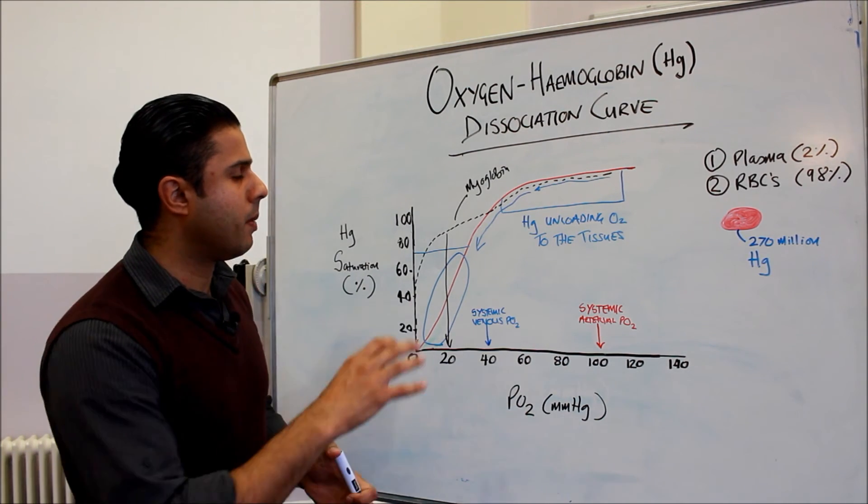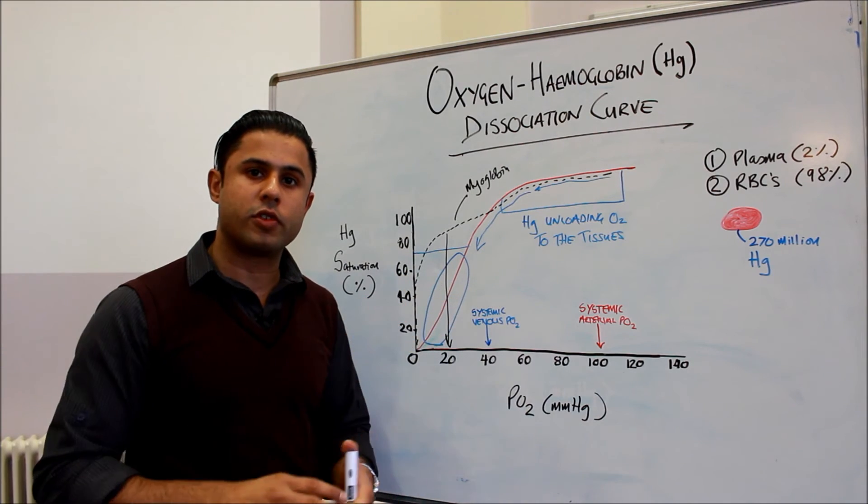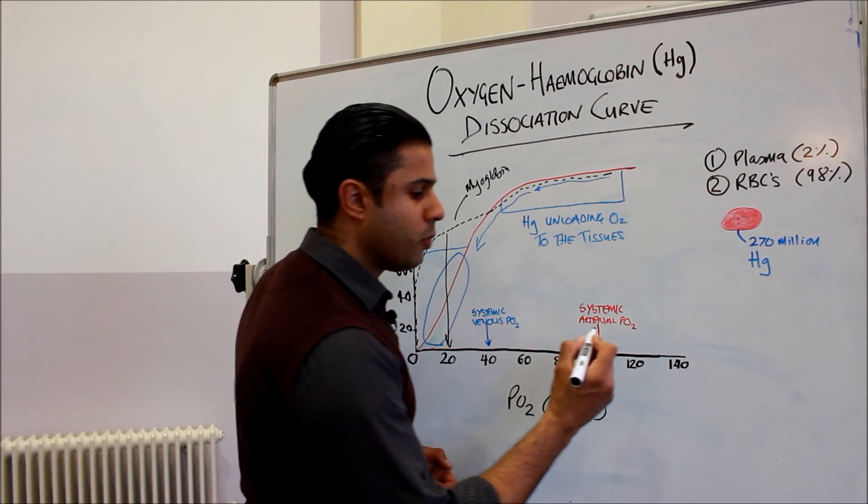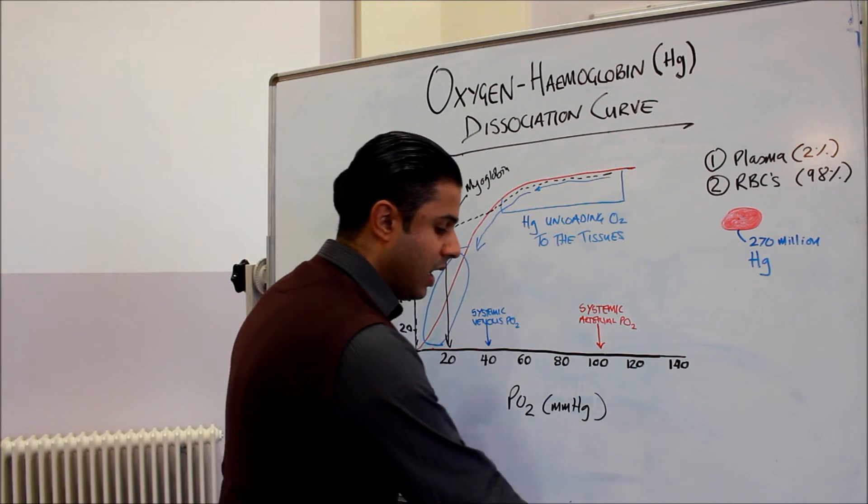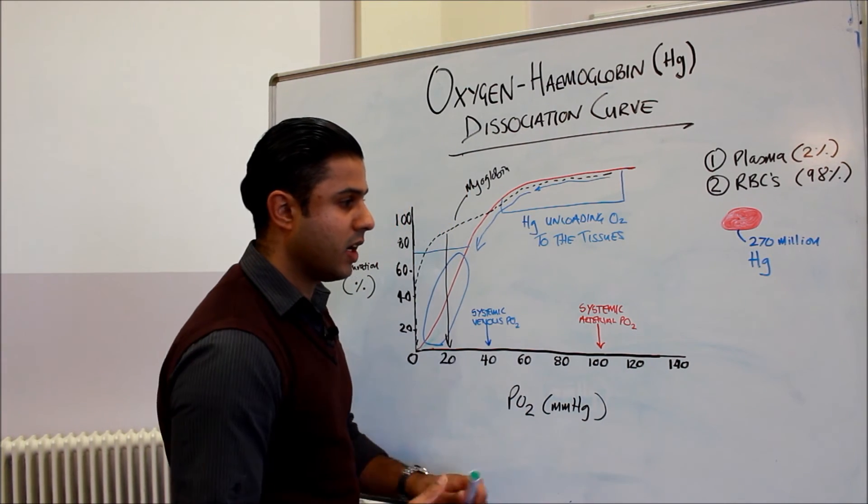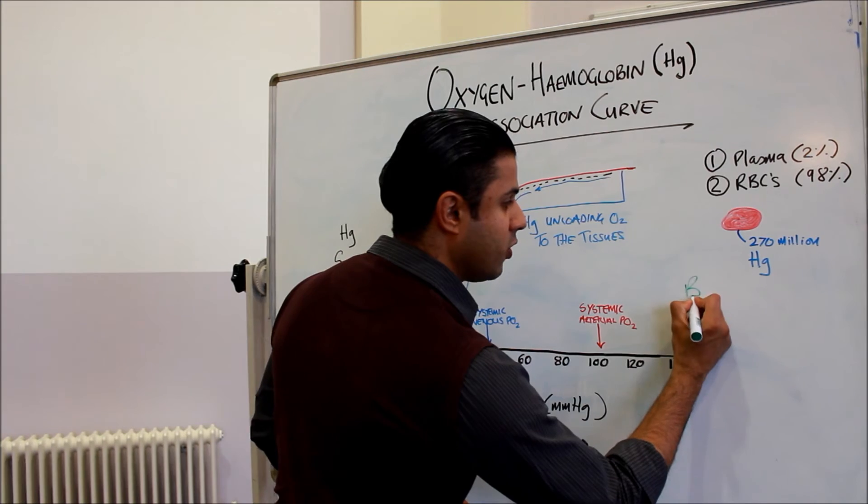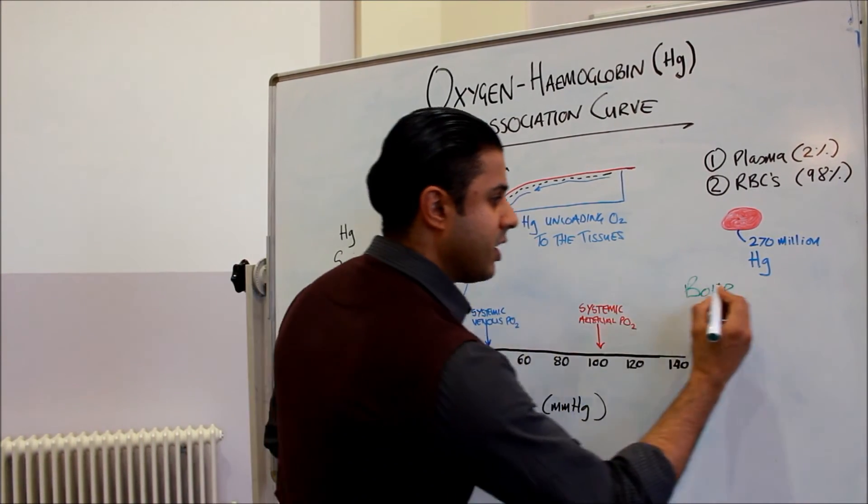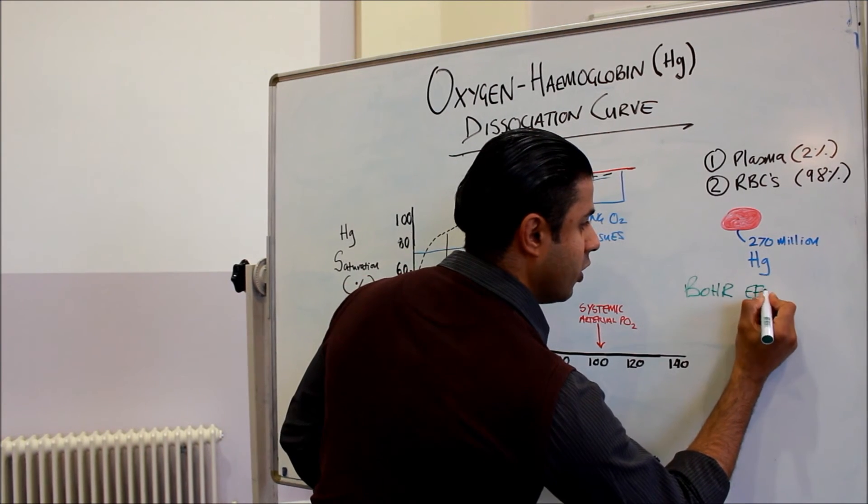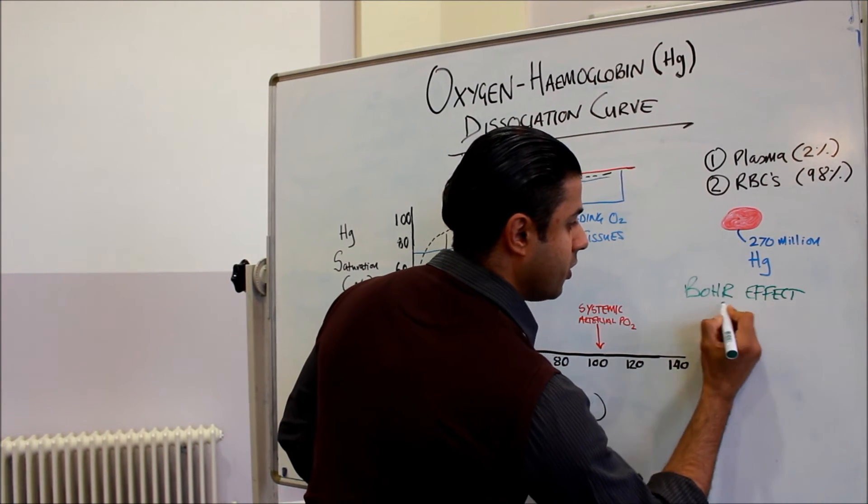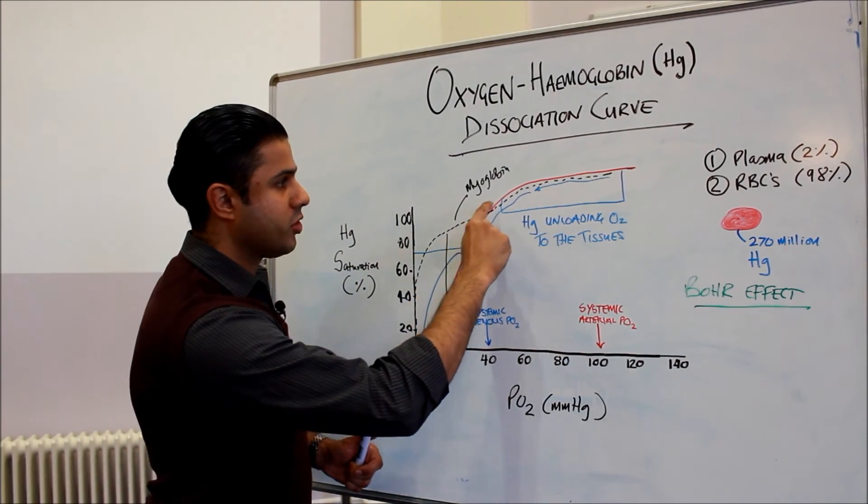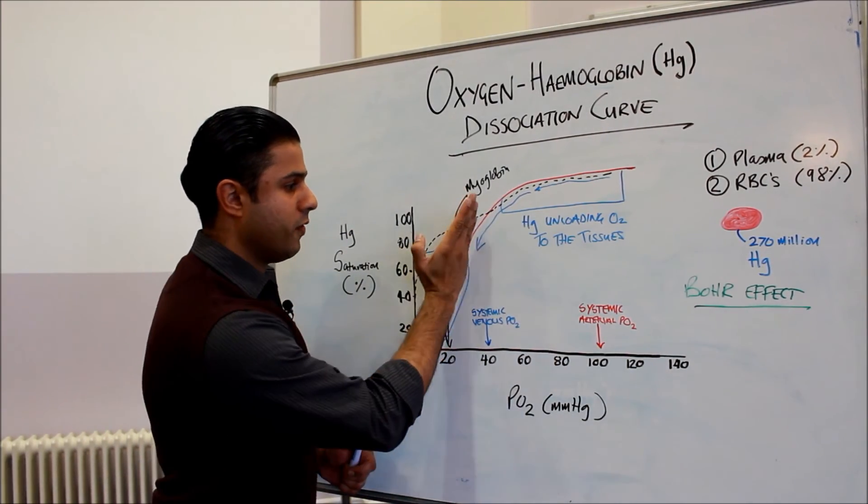Now one important thing to consider with the oxygen hemoglobin dissociation curve is something called the Bohr effect, which we talked about in the video about carbon dioxide. And really these two videos are related—carbon dioxide transport and the oxygen hemoglobin dissociation curve. So the Bohr effect is the shifting of this oxygen hemoglobin dissociation curve to the right.